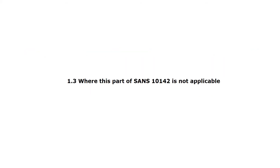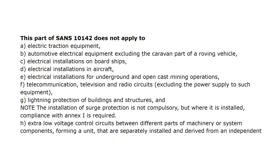Section 1.3: Where this part of SANS 10142 is not applicable. This part does not apply to: A. Electric traction equipment. B. Automotive electrical equipment, excluding the caravan part of a roving vehicle. C. Electrical installations on board ships. D. Electrical installations in aircraft. E. Electrical installations for underground and open cast mining operations. F. Telecommunication, television and radio circuits, excluding the power supply to such equipment.